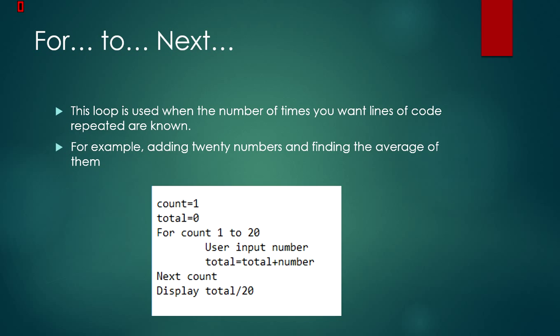For to next is the first loop, and it is used when the number of times you want lines of code to be repeated are known. For example, adding 20 numbers and finding the average of them.